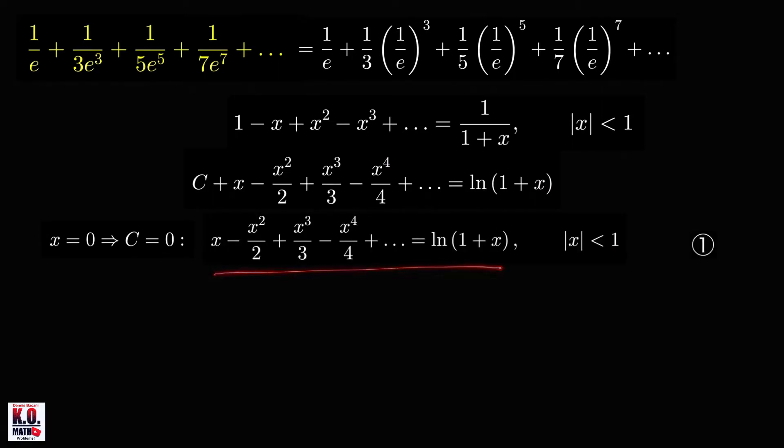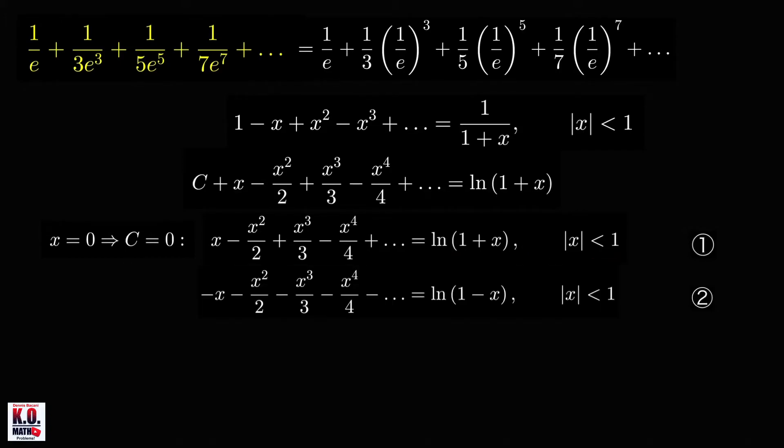So let's name this equation, equation 1. And if we replace the x here by negative x, we'll get the following equation. Negative x minus x squared over 2 minus x cubed over 4 minus and so on is equal to ln of 1 minus x. And this is valid again for absolute value of negative x less than 1. That is the same thing as absolute value of x less than 1. So let's name this new equation here, equation 2.